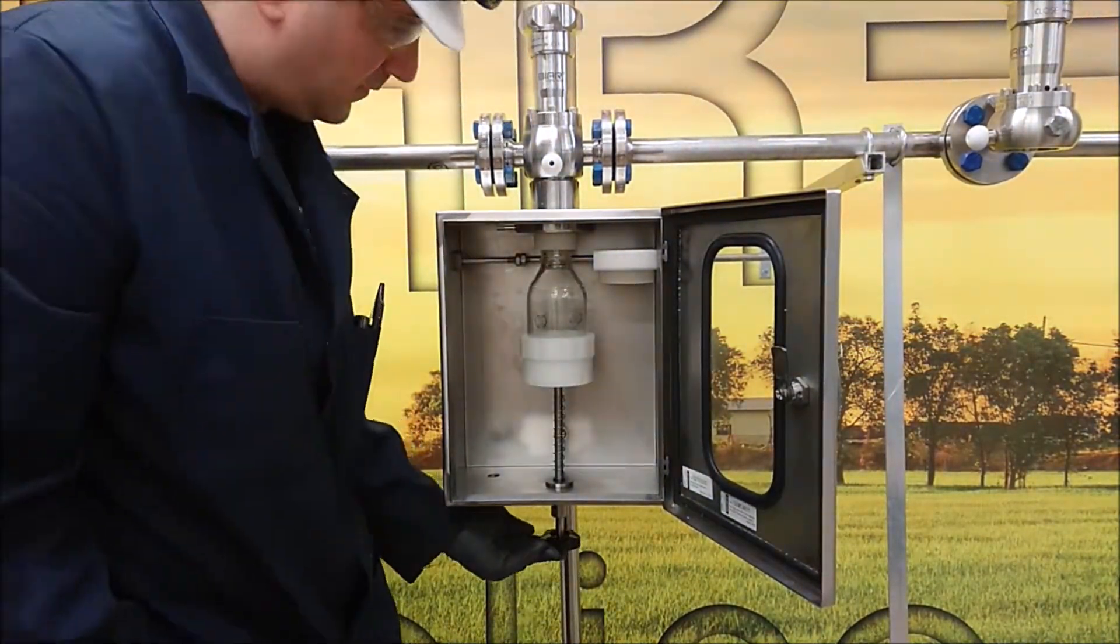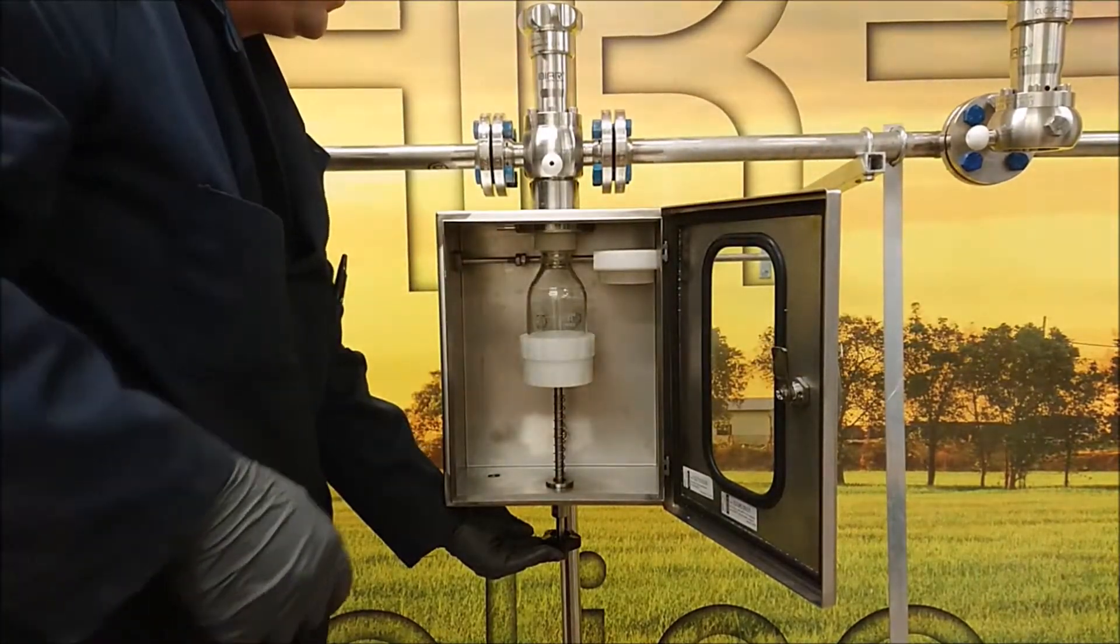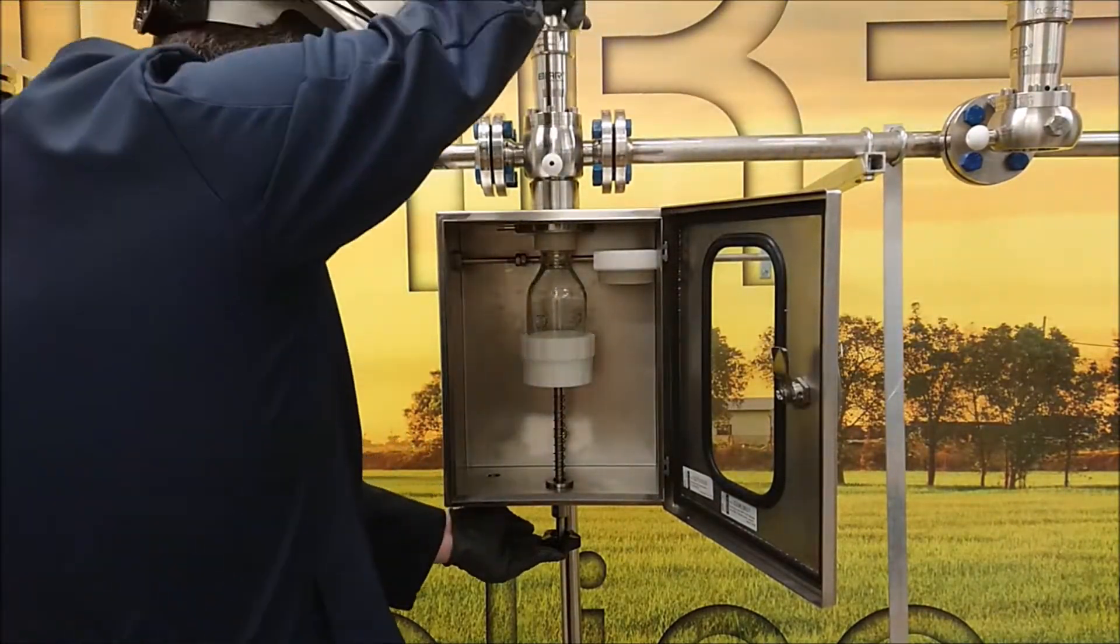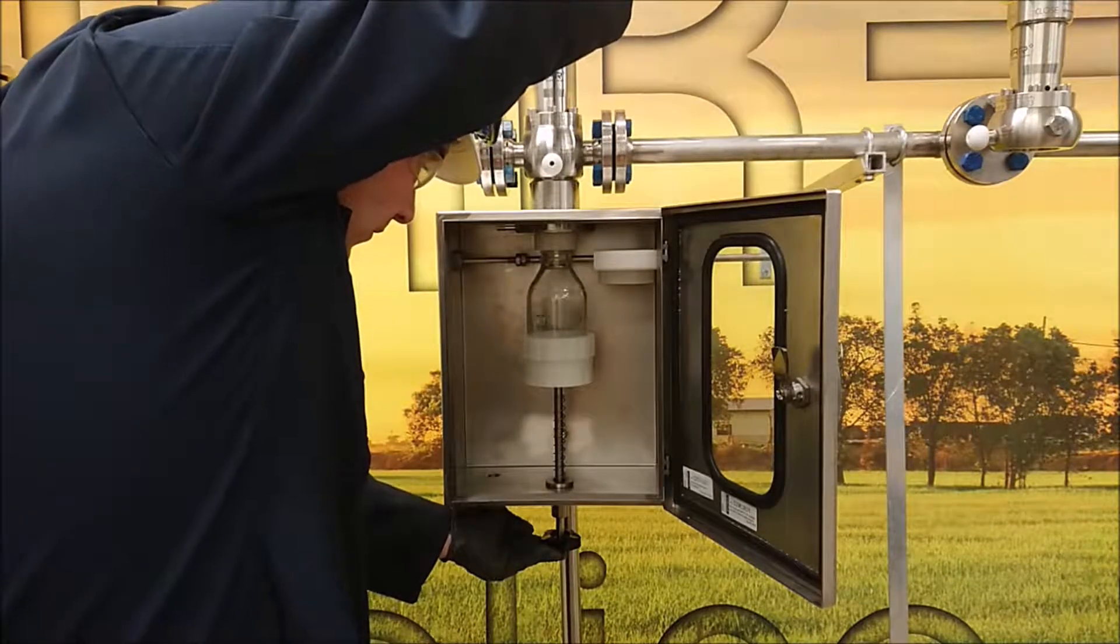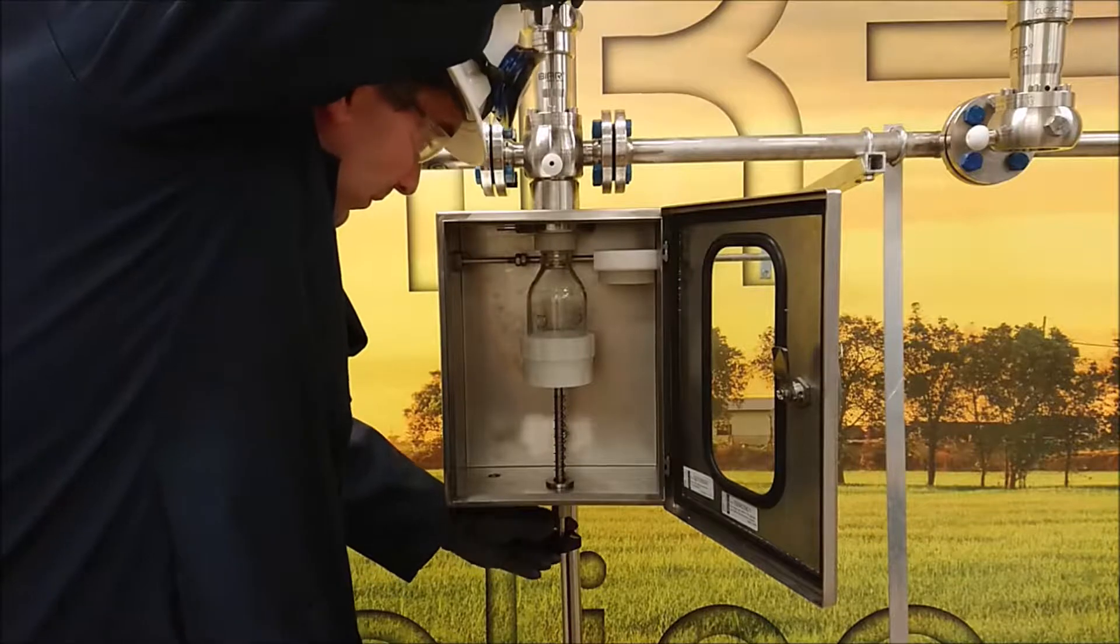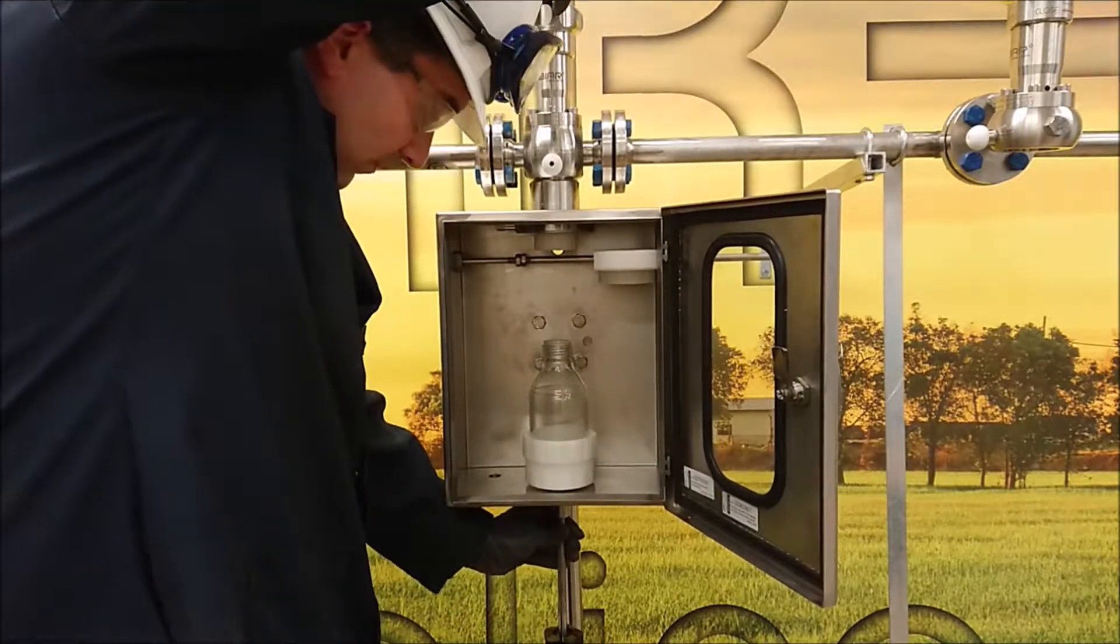The operator lifts the bottle and closes the door. He can now open the valve to grab the sample. Looking in the bottle, he sees how much sample is collecting. Once enough sample is collected, he closes the valves and lowers the bottle.